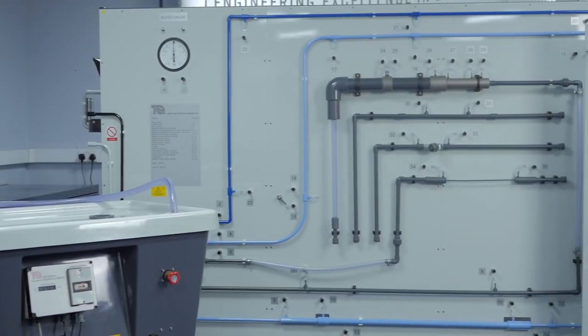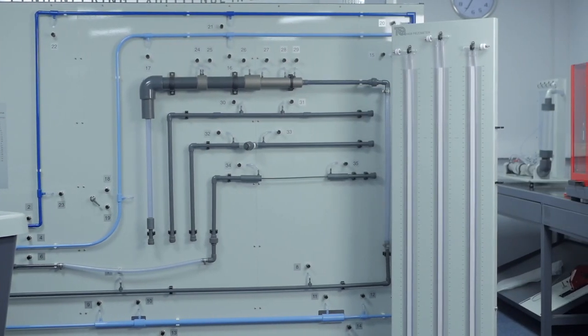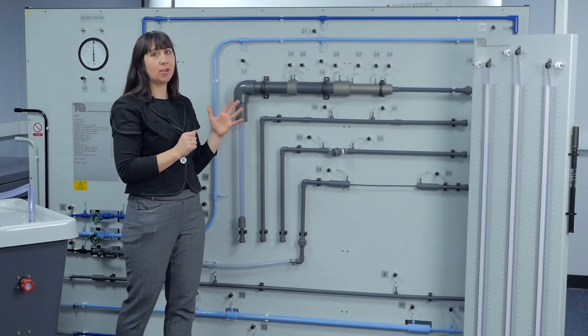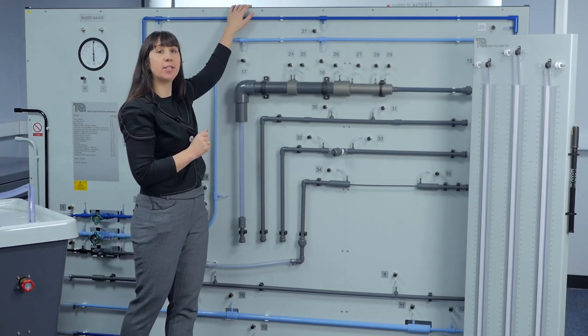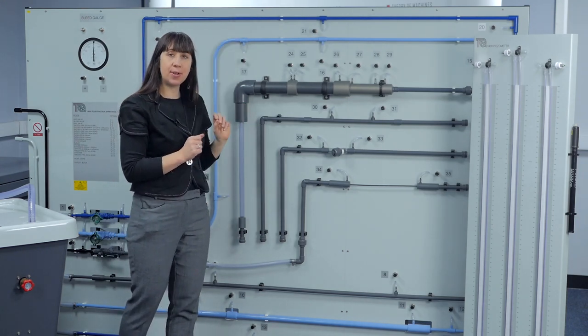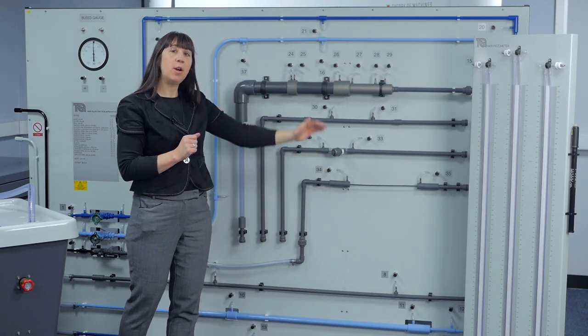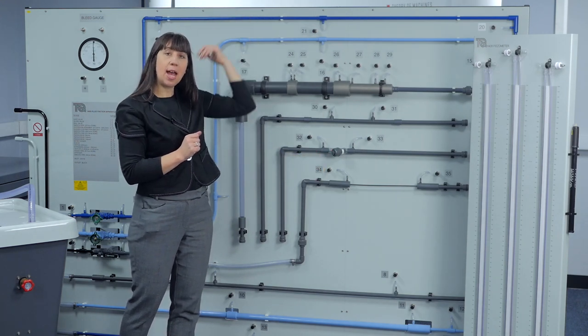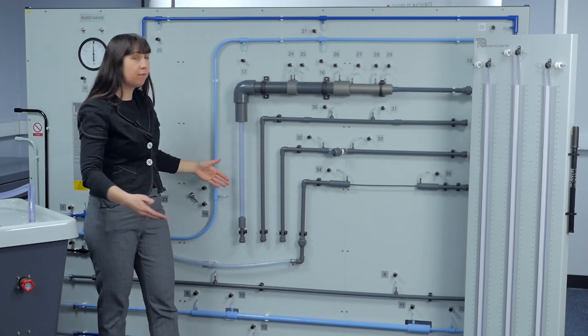Let's take a look around the fluid friction apparatus. All the experimental elements are mounted on a sturdy vertical mobile frame. The main unit is 2.8 metres long, 1.85 metres high and 0.8 metres from front to back.